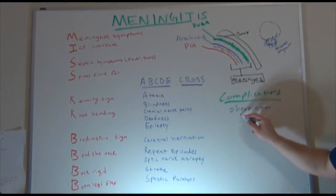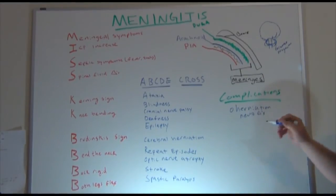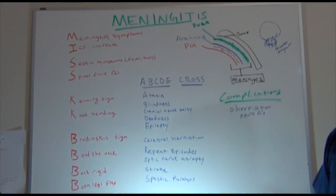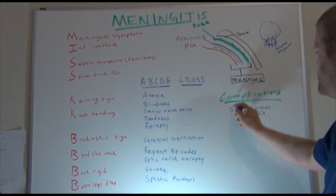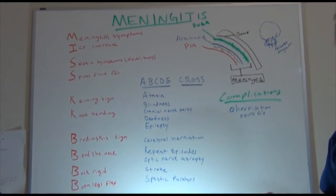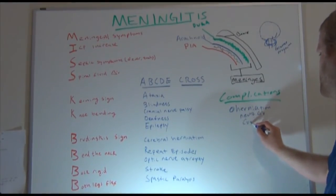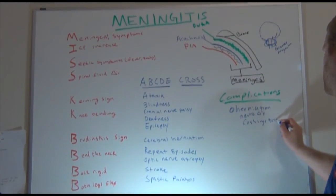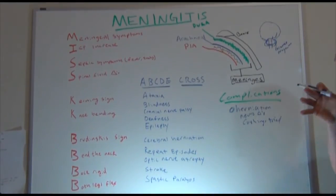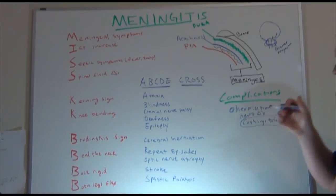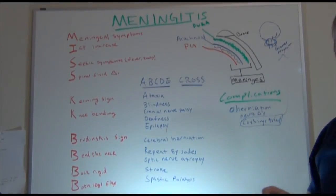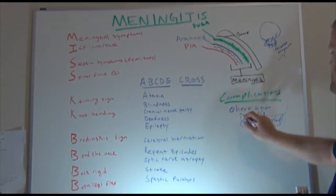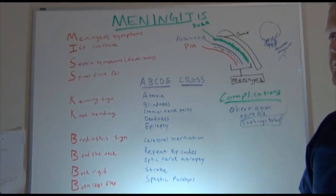We're going to want to watch our patients for neuro changes — that's the best way we can monitor for herniation. You're going to want to watch for pupils becoming fixed and dilated, and any sudden neuro changes. The things you're really going to be looking for here are Cushing's triad — not Cushing's disease, but Cushing's triad — which has to do directly with brain herniation and the symptoms you're going to look for. Look for neuro changes and vital sign changes as well.